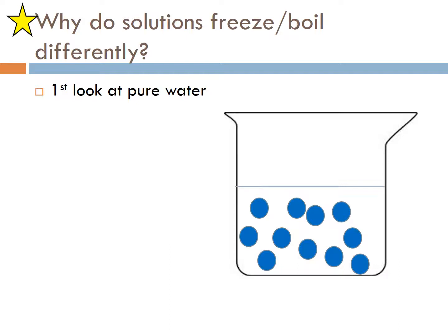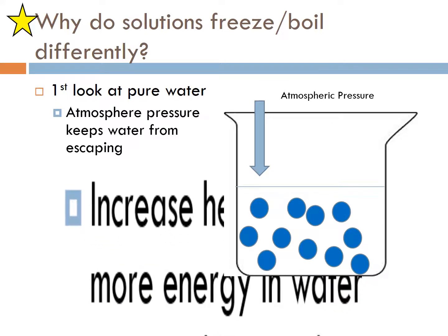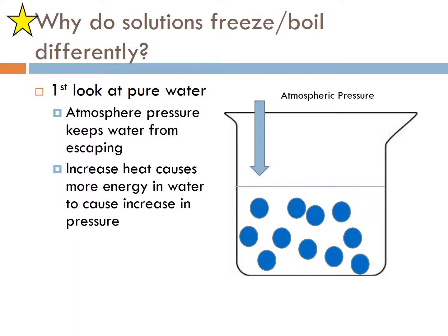Let's look at a model of it. First pure water: atmospheric pressure keeps the water from escaping, so there's a pressure pushing down on those molecules to keep it from leaving the phase. As you increase heat, more energy is causing the water to escape its pressure. They're moving faster and faster and faster, and as they get more and more energy they'll escape the atmospheric pressure and start to leave and become steam.